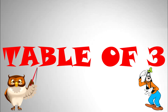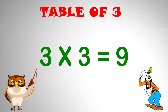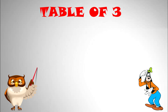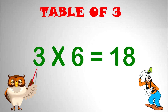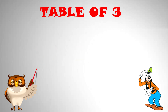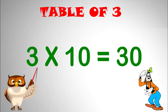Table of 3. 3 x 1 equal to 3. 3 x 2 equal to 6. 3 x 3 equal to 9. 3 x 4 equal to 12. 3 x 5 equal to 15. 3 x 6 equal to 18. 3 multiplied by 7 equal to 21. 3 multiplied by 8 equal to 24. 3 multiplied by 9 equal to 27. 3 multiplied by 10 equal to 30.